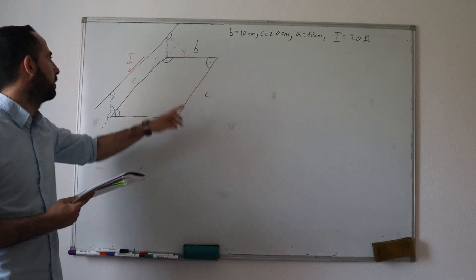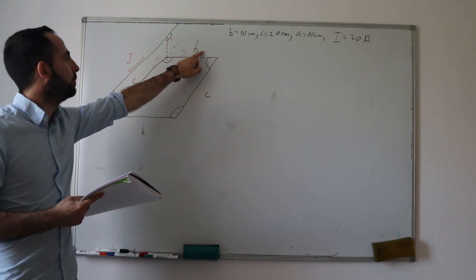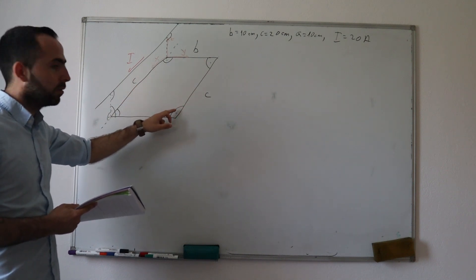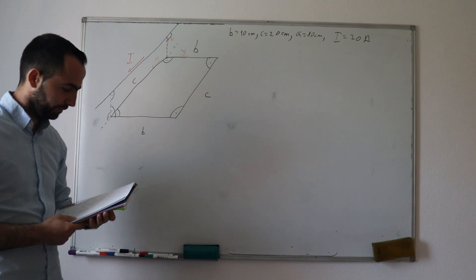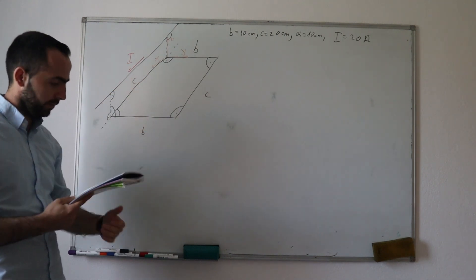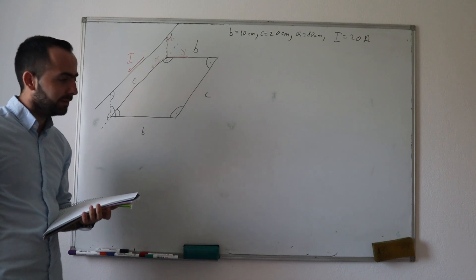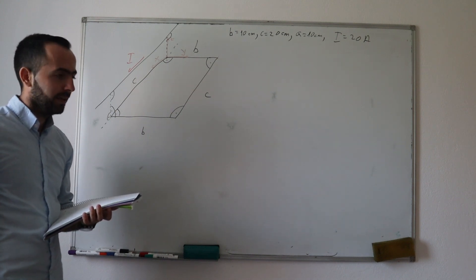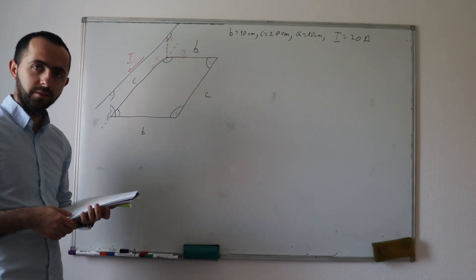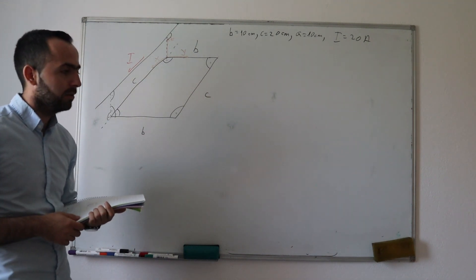A rectangular current conductor is given with dimensions B and C. All of these angles are 90-degree angles and we have been given sides C and B. B is 10 centimeters, C is 20 centimeters. I remind you to immediately transform centimeters into meters so that you don't make a mistake during calculations.